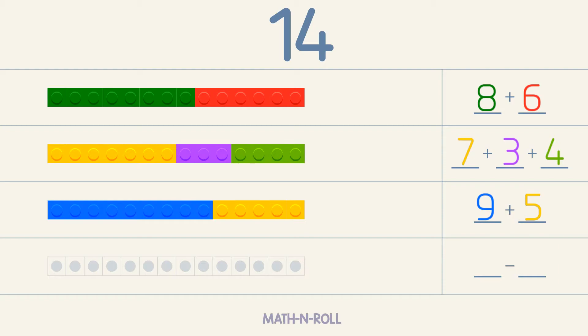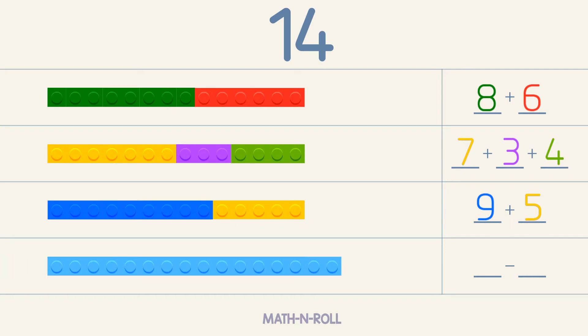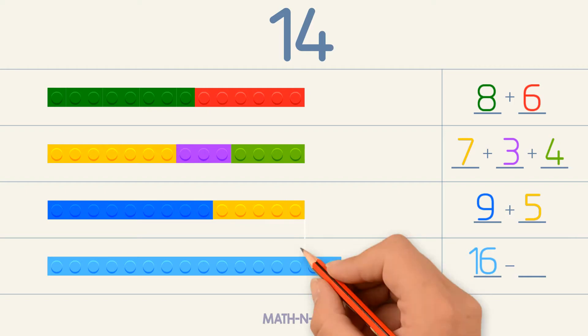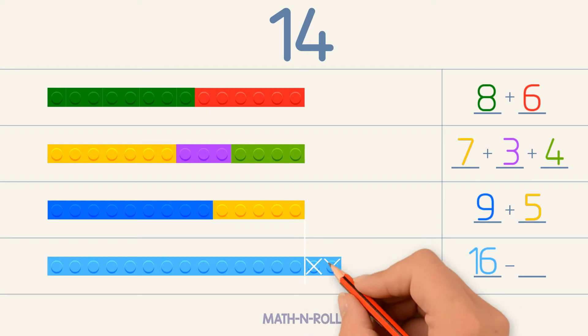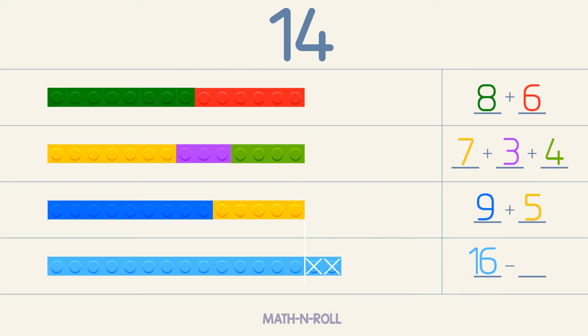We can also make 14 by subtracting numbers. We pick a number that is greater than 14, like 16. To make 14, we have to take away 2 pieces. So 16 minus 2 equals 14.